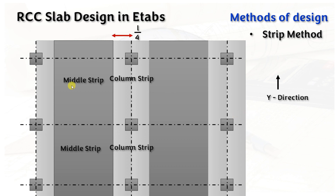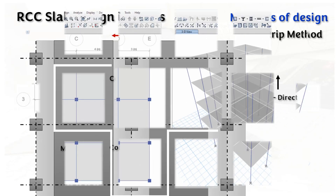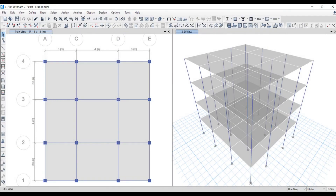In the Y direction also you have to divide the strip in this way: column strip, middle strip, and again column strip. This distance has to be L/4, where L is the shorter dimension of the slab. After the column strip you have to divide the middle strip — column strip, middle strip, column strip — in the Y direction as well, in order to proceed the strip method of design.